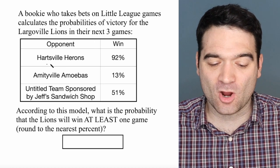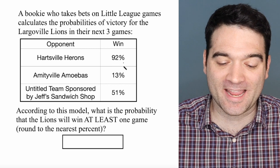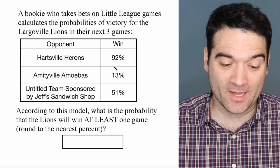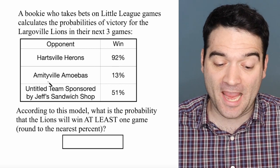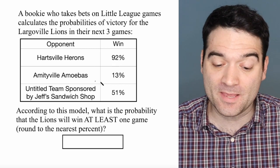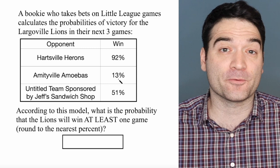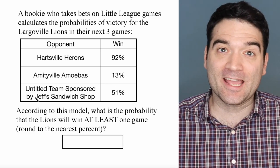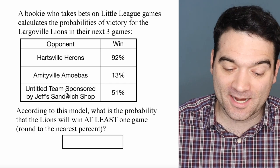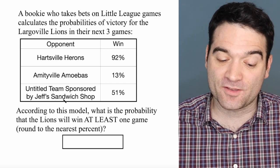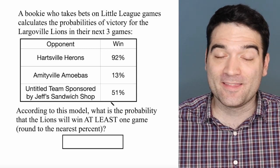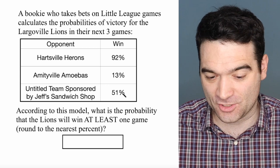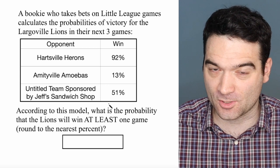Against the Hartsville Herons, they have a 92% chance of winning. Against the Amityville Amoebas, they have a 13% chance of winning. And against Untitled Team sponsored by Jeff's Sandwich Shop, they have a 51% chance of winning.